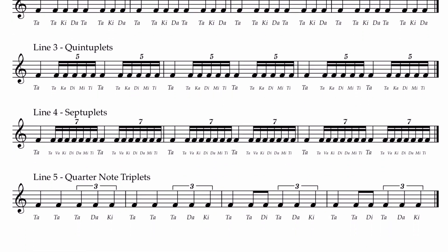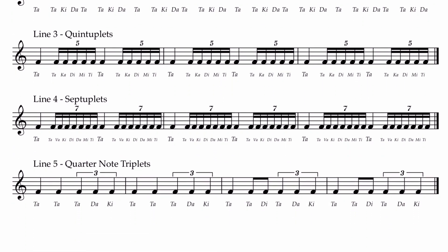Now we're going to jump down to line three, which is quintuplets. Quintuplets are groups of five. What you say for these is 'takadimiti.' Takadimiti. Takadimiti. Takadimiti. The 'ta' is the beat.